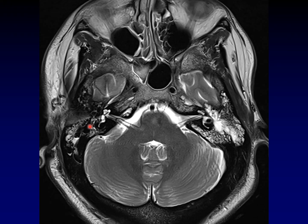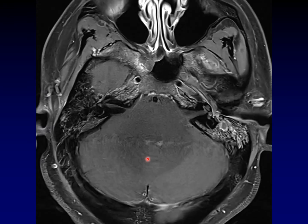Let's take a look at the post-contrast imaging in this same patient. Sure enough, there's enhancement around the mucosa of all of these air cells — this is indeed mastoiditis. Whereas on this side, we don't have that same enhancement. This is just a mastoid effusion.